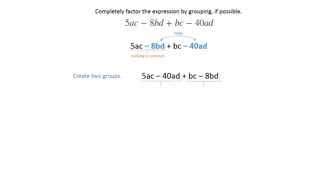Now you can create two groups, and in the first group, you've got a 5A and a 40A, so everything is divisible by 5 and by A. 5A is the common factor in the first group. Take the 5A out and divide, and that leaves you with C minus 8D.